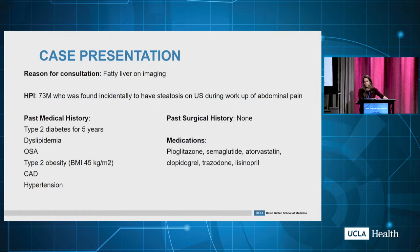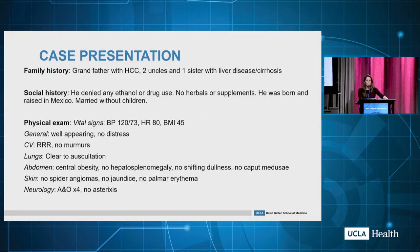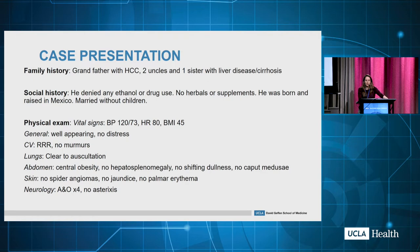Semaglutide has recently been FDA-approved for weight loss. Family history was pertinent for a grandfather with hepatocellular carcinoma, or HCC. He also had two uncles and a sister with liver disease, which was maybe thought to be related to alcohol or not, which is a very common history. The patient himself denied any alcohol use, any drug use, and he was born and raised in Mexico. Physical exam was pretty unrevealing, other than the BMI of 45, but he did not have any stigmata of chronic liver disease or decompensated cirrhosis.